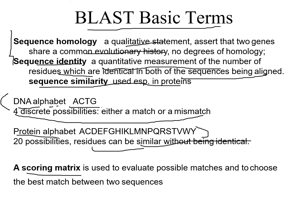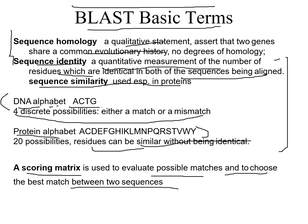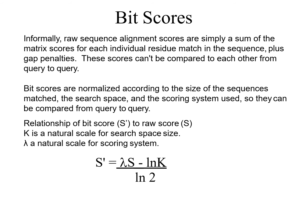The scoring matrix is used to evaluate possible matches and mismatches and to choose the best match between two sequences — essentially finding the optimal alignment score. We have already covered scoring matrices in the context of global and local alignment.